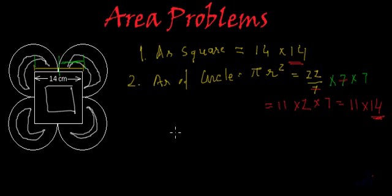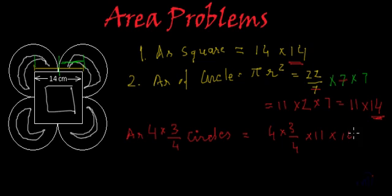And how many such circles we have? We have 4 circles and in each circle only 3 by 4 part of the circle is visible. So area of 4, 3/4th circles will be 4 multiplied by 3 by 4 multiplied by 11 multiplied by 14. And here this 4 will cancel this 4. And area of 4, 3/4th circles will be 3 multiplied by 11, that is 33 multiplied by 14.